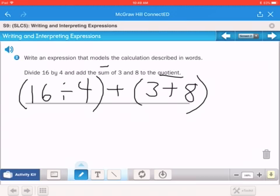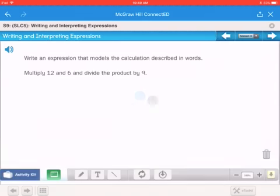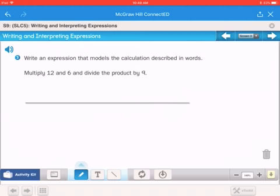Again, you could have flipped the 8 and 3 around. You could have done that if you wanted to. So our next question reads, write an expression that models the calculation described in words. It says multiply 12 and 6. So we multiply 12 times 6. So you get 12 and 6. And then it says, and divide the product. That just means whatever this answer is. Product is the answer to a multiplication problem by 9.